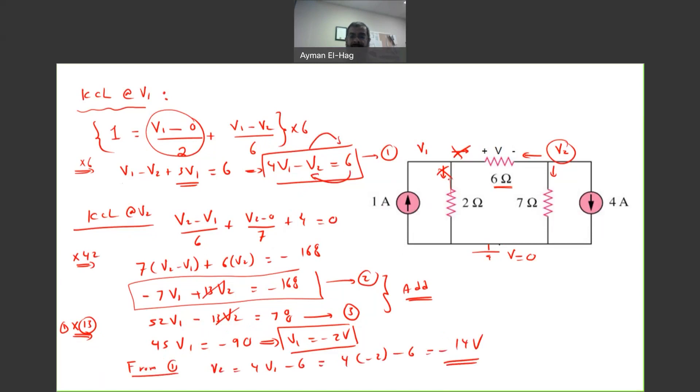So, your V2 is minus 14 V, your V1 is minus 2 V, and this is your reference equal to 0.